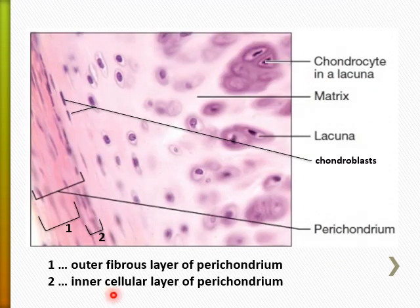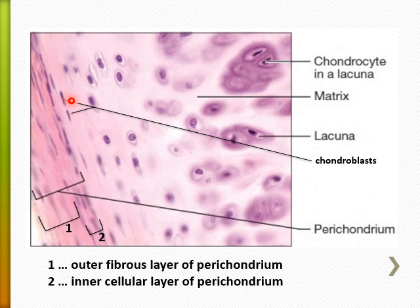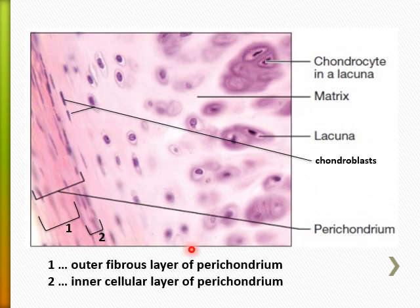This is a light microscopic picture of the hyaline cartilage. It is surrounded with perichondrium formed of an outer fibrous layer and inner chondrogenic layer. Near the inner chondrogenic layer is the chondroblast. When the chondroblast secretes the matrix and collagen type two, it becomes a chondrocyte, present inside a lacuna, and divides into two or four forming the cell nest or isogenous group. Collagen type two cannot be demonstrated.